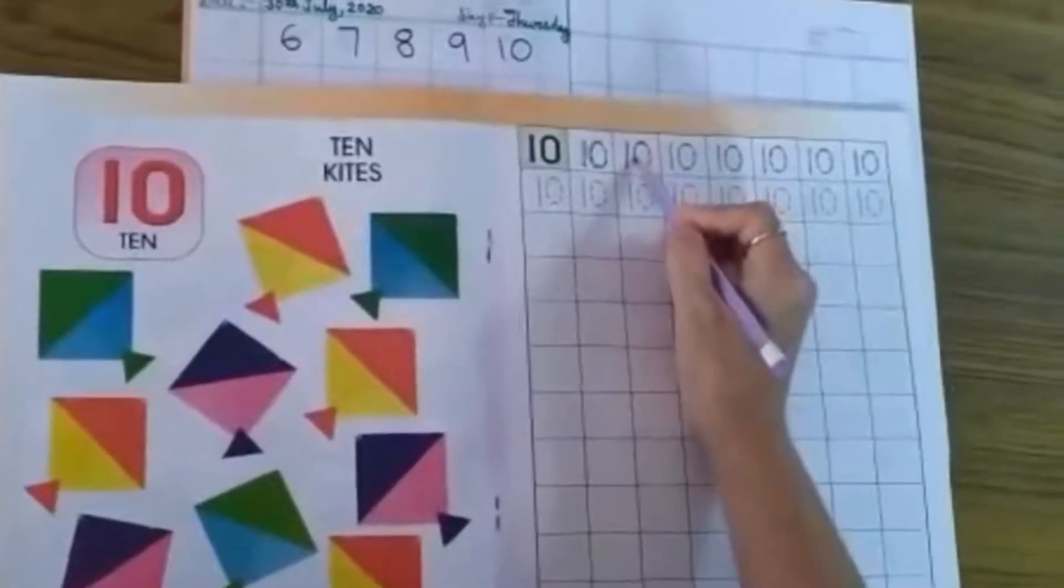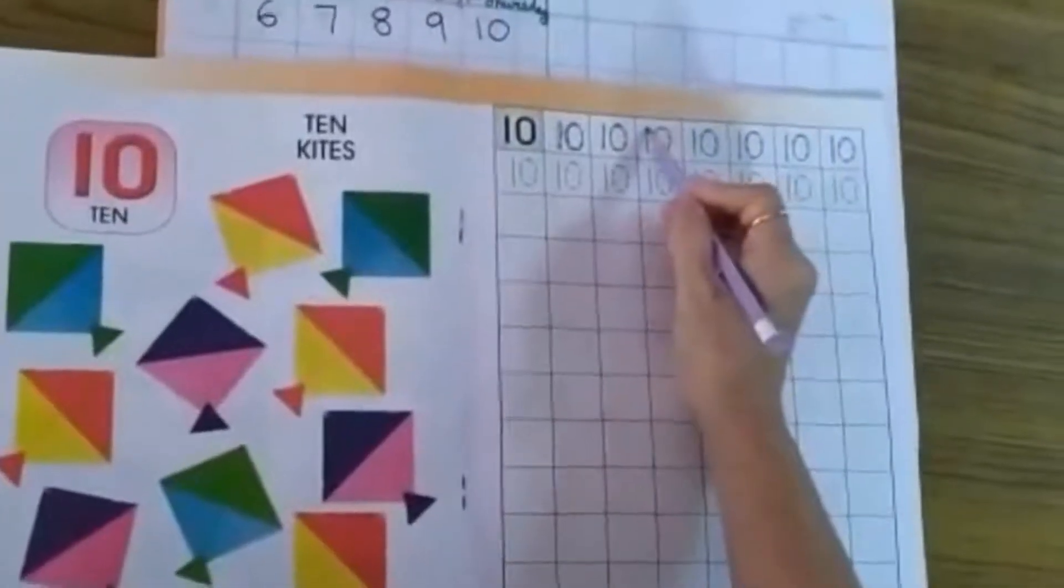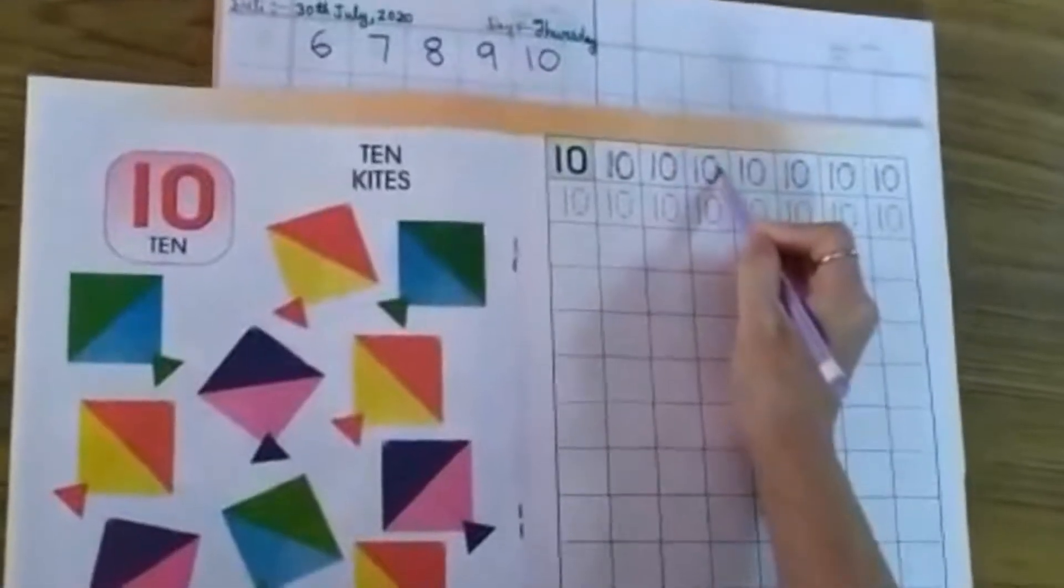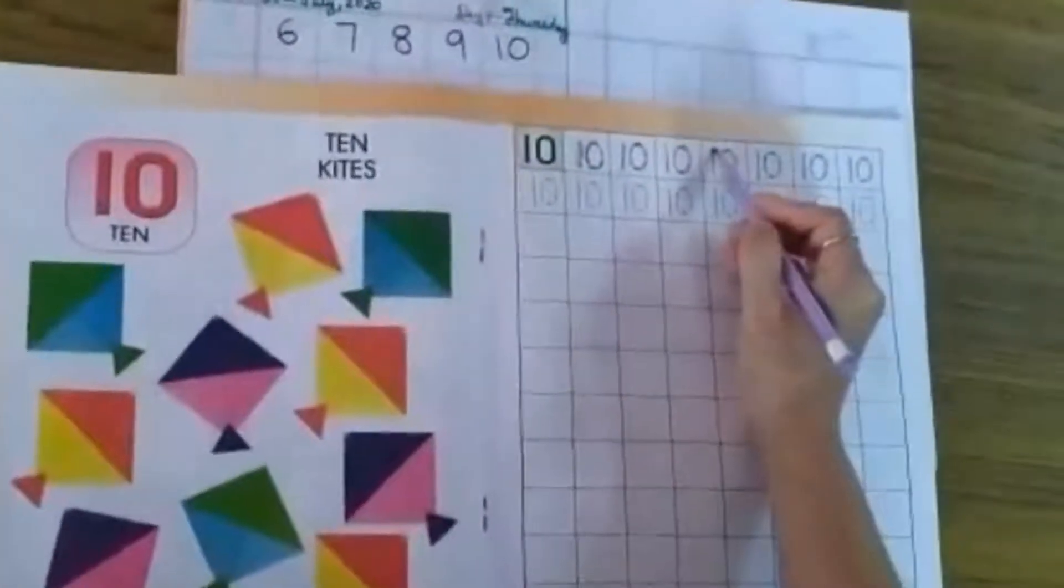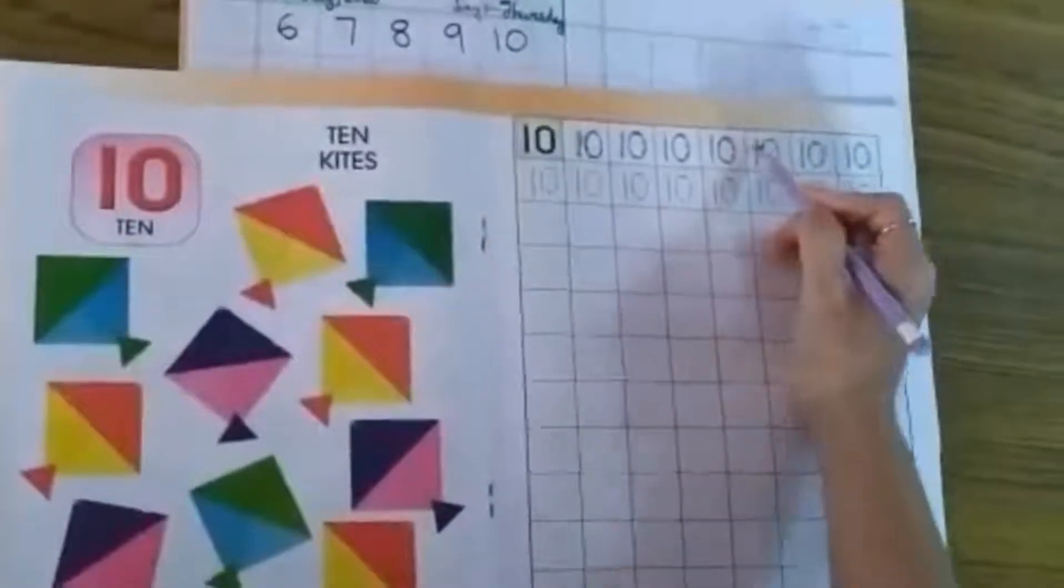You trace 1 and 0 together. 1, 0, 10. First you trace 1, 0, 10.